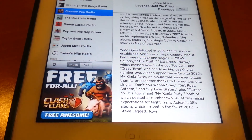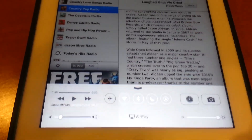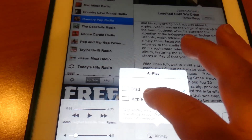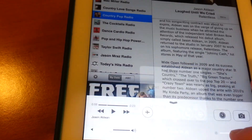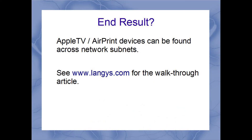So now jumping back on the iPad, if we check for media devices now, we'll see the AirPlay that's available, and we'll be able to select our Apple TV. If I were to go through and play the Pandora songs here, you would see that it would play through my Apple TV. We have success. Our end result is that the Apple TV and AirPrint devices can be found across subnets, accomplished by using low-cost Raspberry Pi software and a downloadable gateway product. For a step-by-step configuration guide, see www.langies.com for the article. Thank you so much.